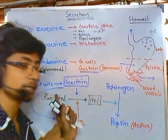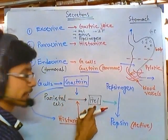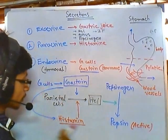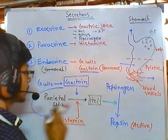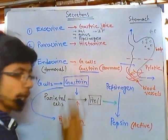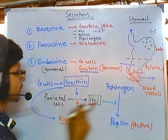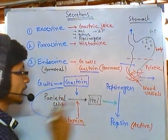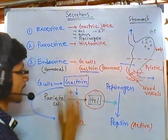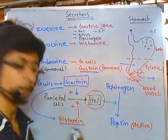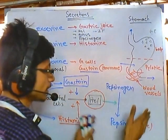Gastrin itself stimulates the secretion of HCl, and it also produces histamine. Histamine then also stimulates the production of HCl. So along with gastrin, histamine is also stimulating the secretion of HCl from parietal cells. The secretion of HCl is now twofold — increased by the action of both gastrin and histamine. Then HCl is produced, pepsinogen is converted to pepsin, and pepsin acts on proteins to degrade them into smaller particles.